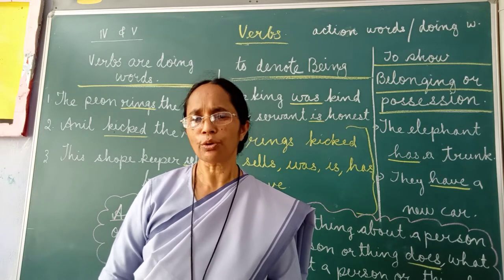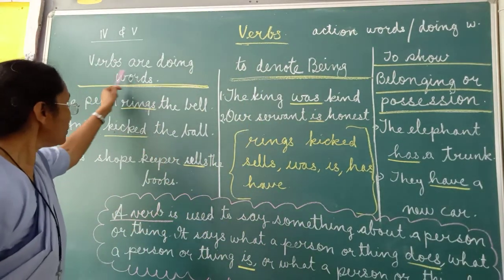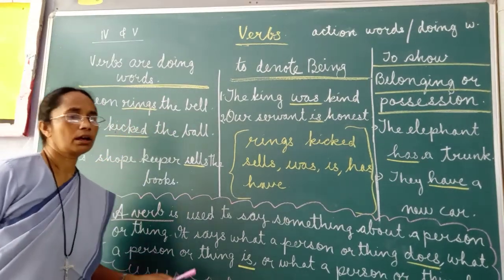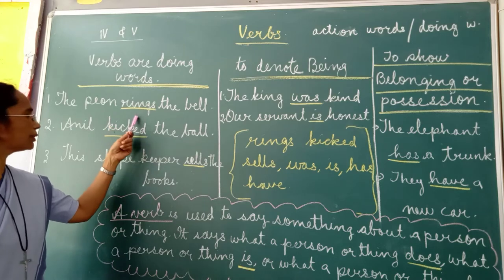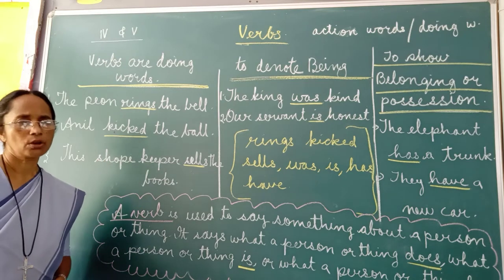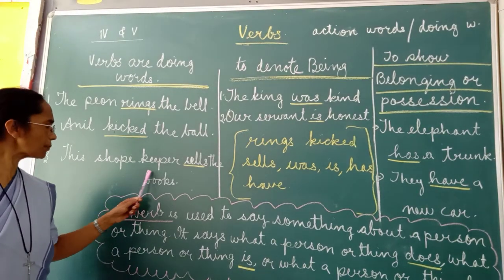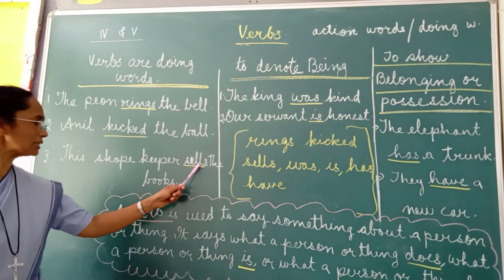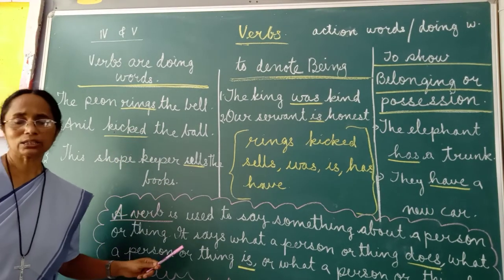There is a little more than doing words in verbs. Let us see what it is. The peon brings the bell. What does the peon do? The peon brings the bell. Onion kicked the bell — what did onion do? Onion kicked the bell. This shopkeeper sells the books — what does this shopkeeper do? This shopkeeper sells the books. So the words brings, kicked, and sells — these are verbs.